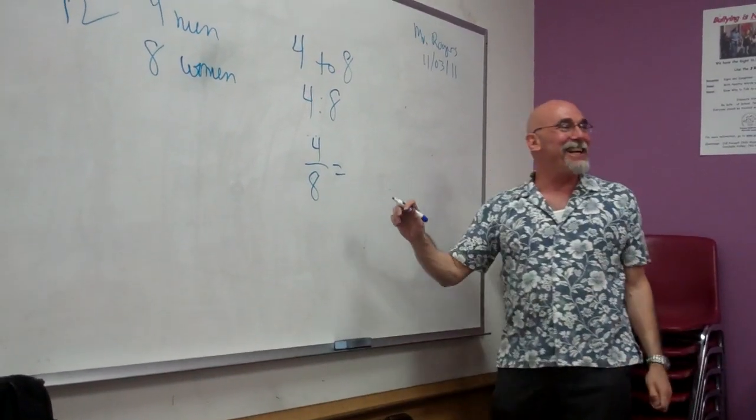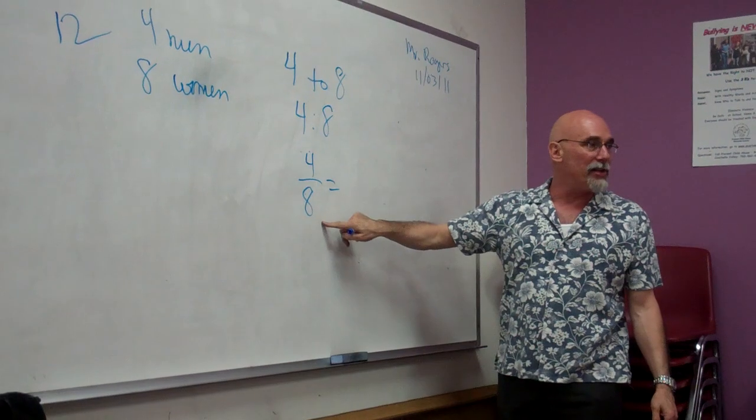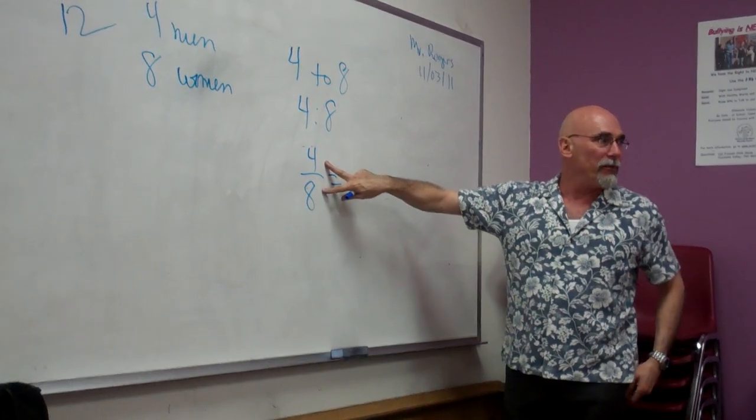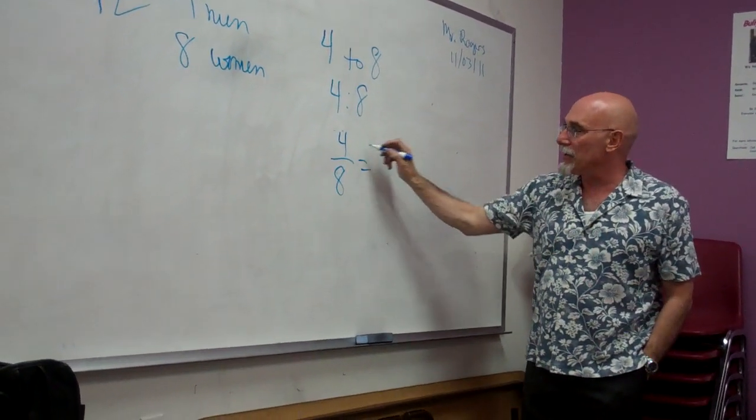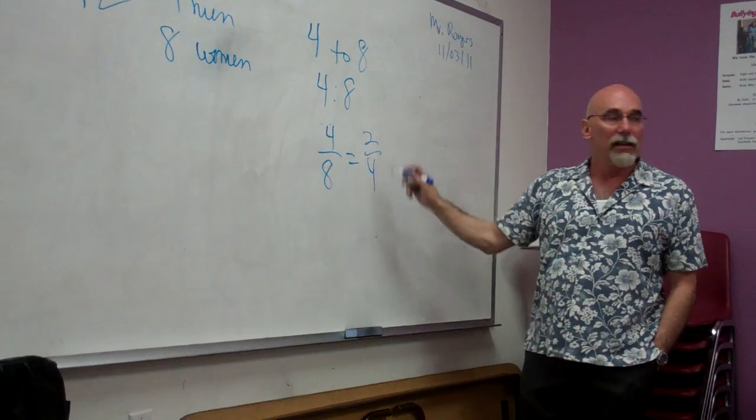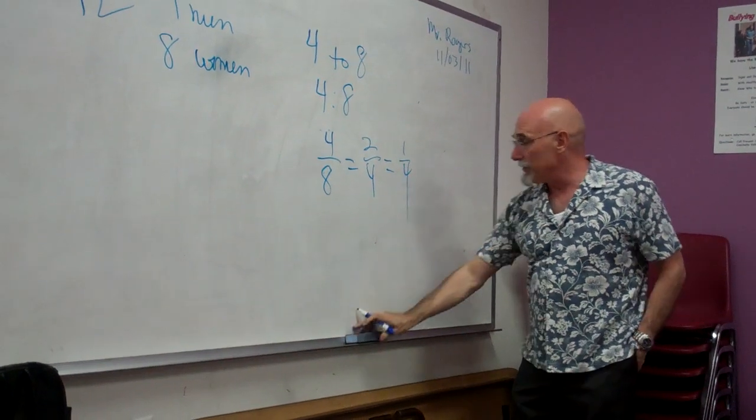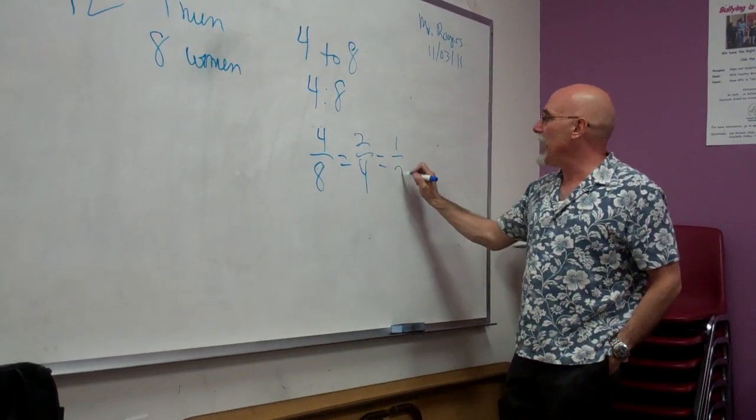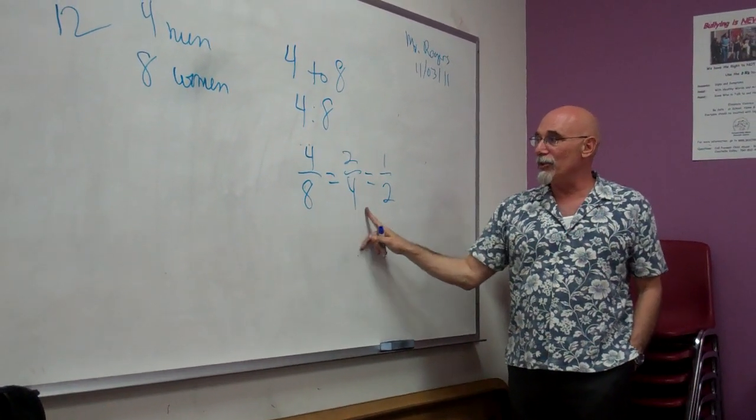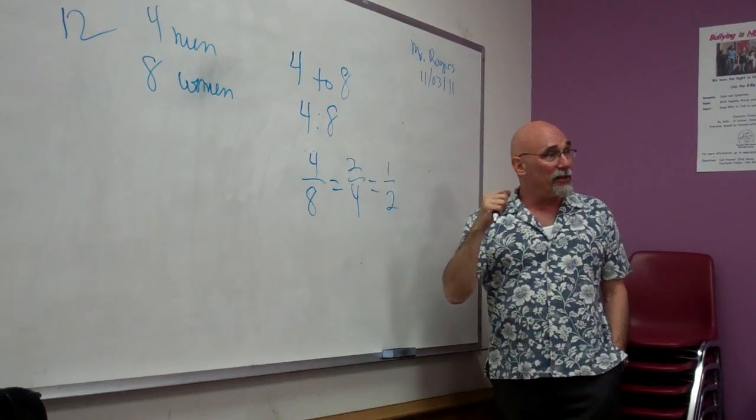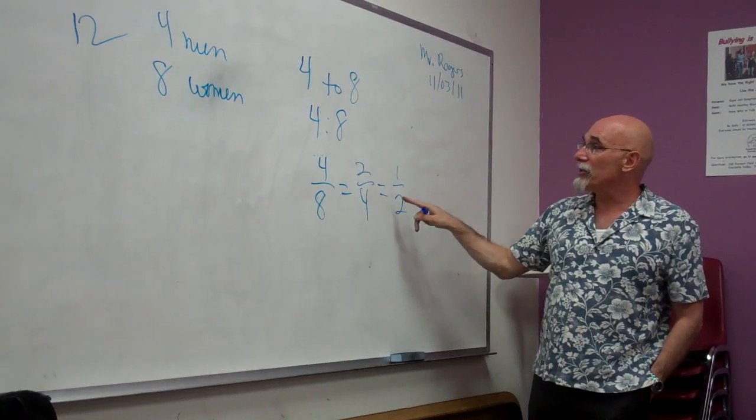Now, let's say, when you're reducing, if you don't automatically realize that four goes into both those, what do we do if both the numerator and denominator are both even? What can it always be divided by? Two. So, you say, okay, so two goes into four, two. Two goes into eight, four. Oh, wait a minute. I see we can do it again. So, it may take you two steps. One half. So, the ratio is one to two.